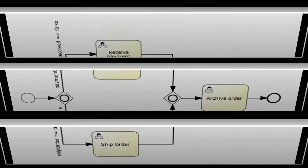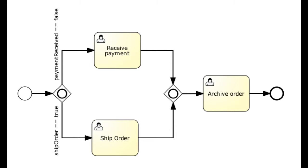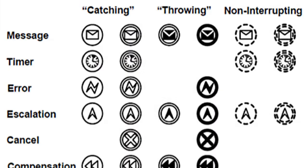BPMN models consist of single diagrams constructed from a limited set of graphical elements. For both business users and developers, they simplify understanding of business activity flows and processes. BPMN's four basic element categories are events, activities, gateways and connections.